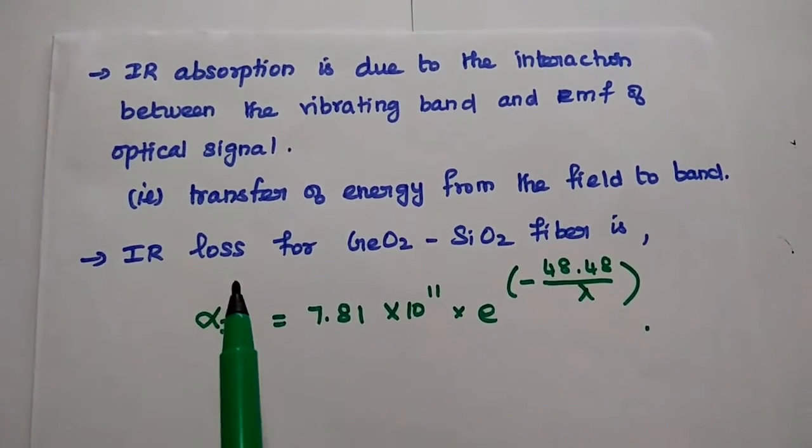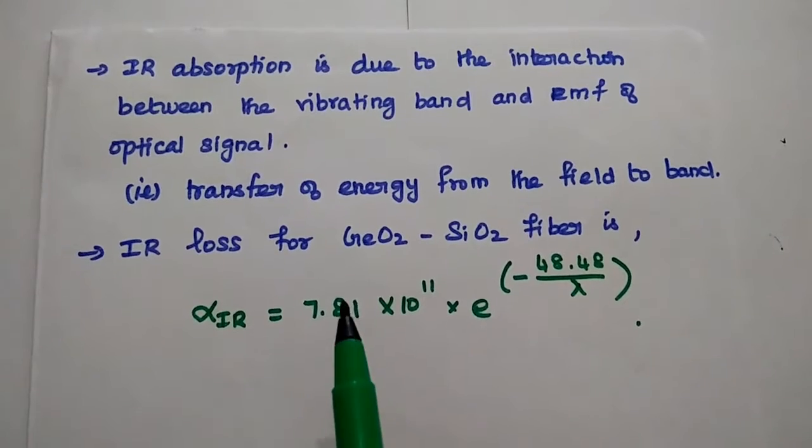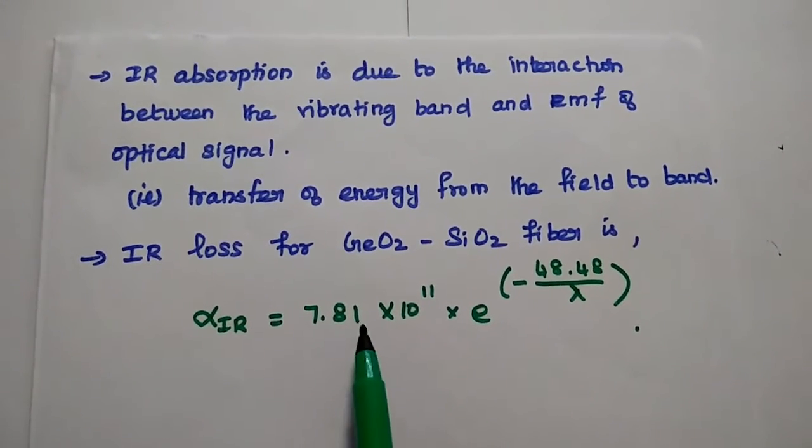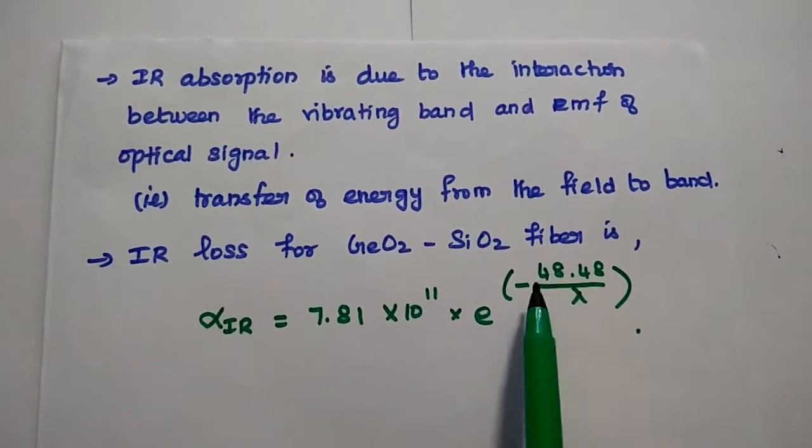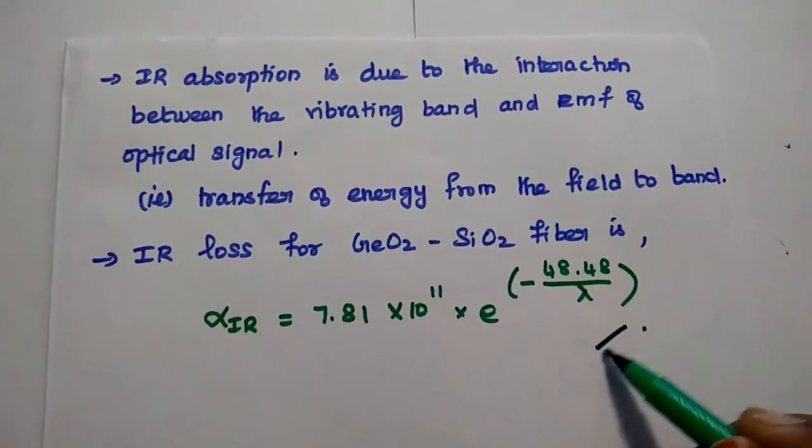The IR absorption loss can be obtained by using this expression 7.81 into 10 to the power 11 into exponential of minus 48.48 by lambda.